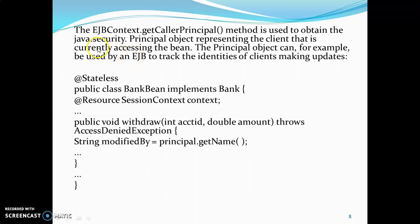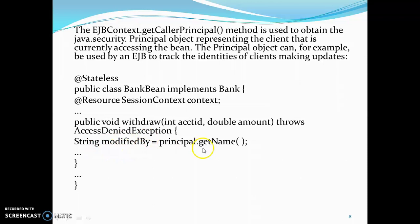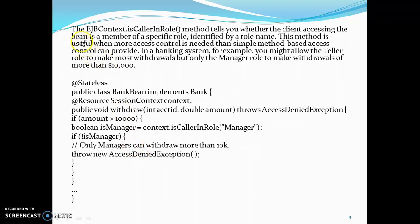The EJBContext.getCallerPrincipal() method is used to obtain the security identity of the EJB client. It returns a java.security.Principal object representing the client currently accessing the bean. The principal object can be used by an EJB to track the identities of clients making updates — most commonly inside banking applications where updates must be tracked. For example, in a BankBean class with @Resource SessionContext, the public void withdraw method records string modifiedBy using principal.getName().